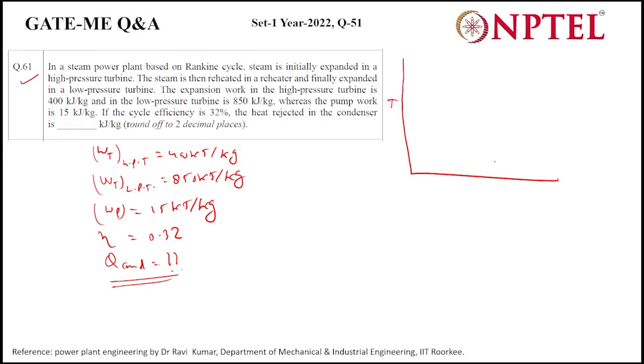So the T-S diagram for this cycle would be near to this. This is the high pressure, this is heating, low pressure, and this is 1, 2, 3, 4, 5, 6. So high pressure turbine would be 3 to 4, and this 4 to 5 is reheating, and 5 to 6 is again low pressure.